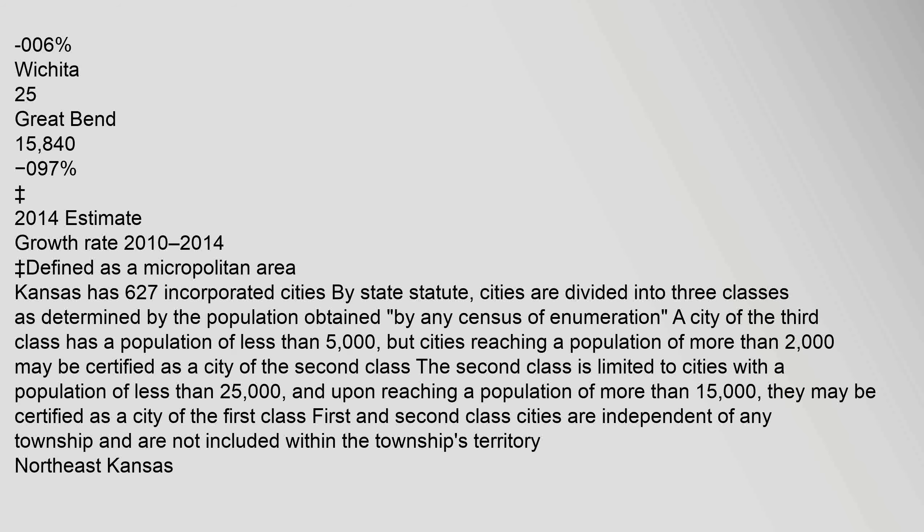Kansas has 627 incorporated cities. By state statute, cities are divided into three classes as determined by population. A city of the third class has a population of less than 5,000, but cities reaching more than 2,000 may be certified as a city of the second class. The second class is limited to cities with fewer than 25,000 residents, and upon reaching more than 15,000, they may be certified as a city of the first class. First and second class cities are independent of any township.